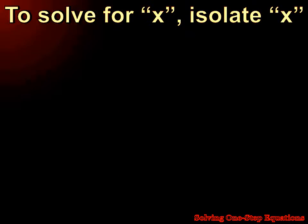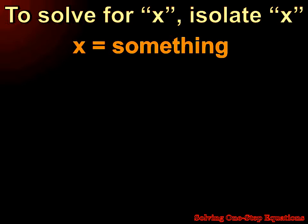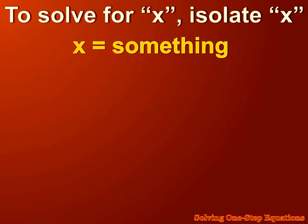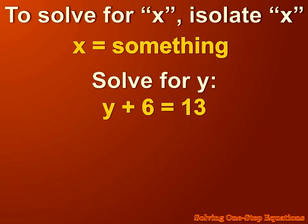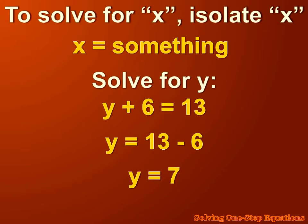Algebra is all about solving for a variable. All the time you're going to be asked to solve for x, or solve for y, or solve for a, or b, or c. And to solve for x, we want to isolate x. We want to modify the equation so it reads x equals something. For instance, if we were asked to solve for y in the equation y plus 6 equals 13, we'd want to change this equation so that instead of saying y plus 6 equals something, it said y equals something. We'd want to get rid of that plus 6, and we could do that by subtracting 6 from both sides of the equation.